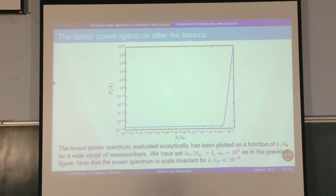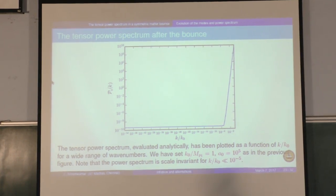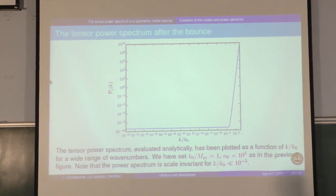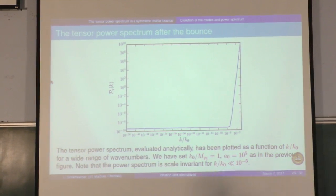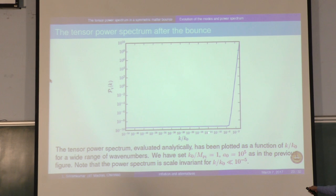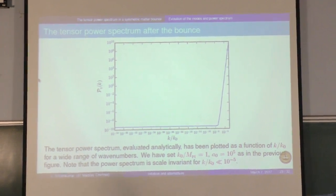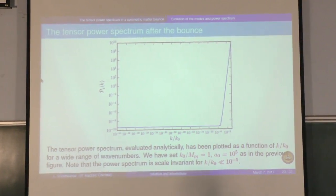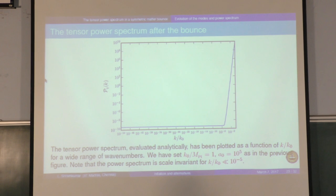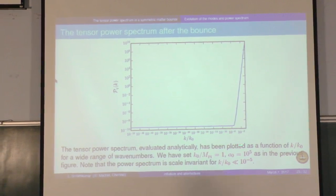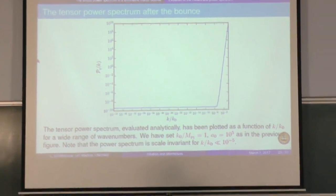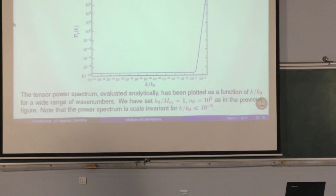You can get a power spectrum which is scale invariant. We have carried out an analytical approximation, valid only at small scales. Over these scales you can get a scale invariant power spectrum of the right amplitude — for instance, if you have A_0, the scale factor at the bounce, to be of order 10 to the minus 5 or so.